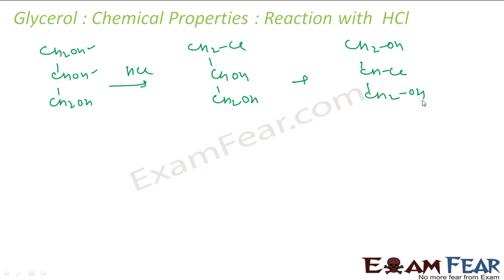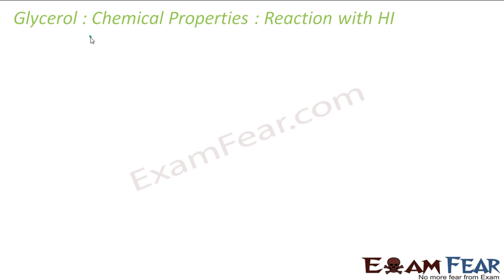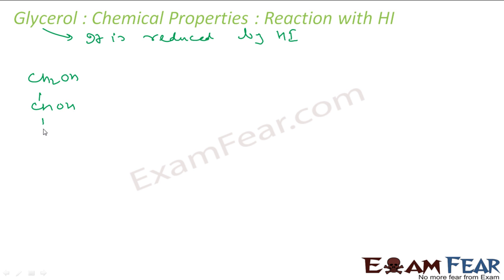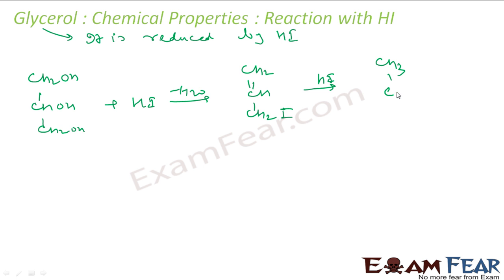Reaction with HI — glycerol is reduced by HI. Starting from CH₂OH, CHOH, CH₂OH reacting with HI, water is eliminated to give CH₂=CH–CH₂I (allyl iodide). Adding more HI gives propene CH₃–CH=CH₂. Adding further HI gives isopropyl iodide CH₃–CHI–CH₃.